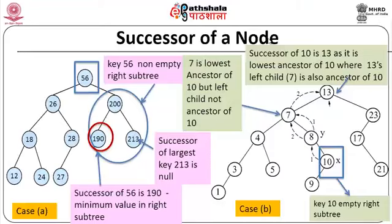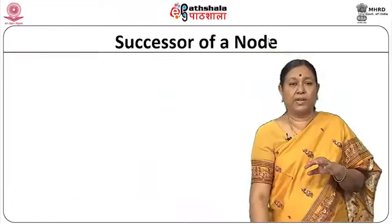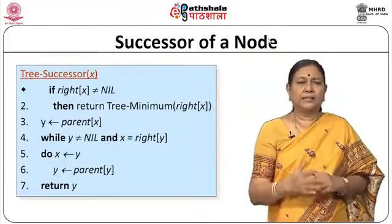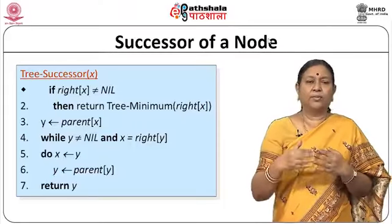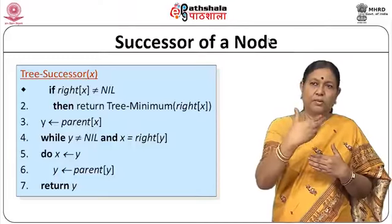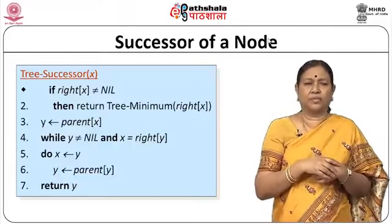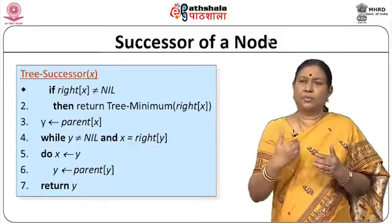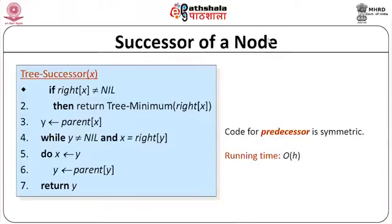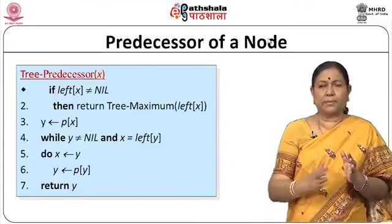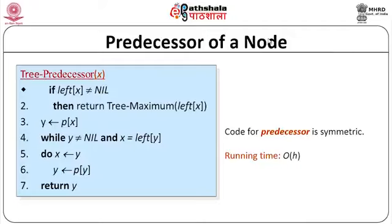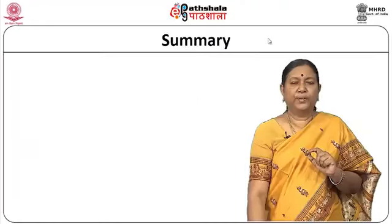The tree successor algorithm: if right[x] ≠ null, return tree_minimum(right[x]); otherwise, set y = parent[x] and move up while y ≠ null and x = right[y], setting x = y and y = parent[y]; return y. Predecessor is symmetric — use tree_maximum and go left instead of right. Running time is O(h).